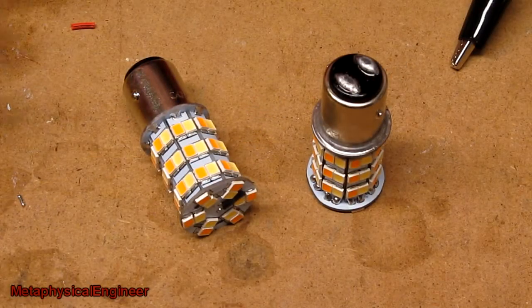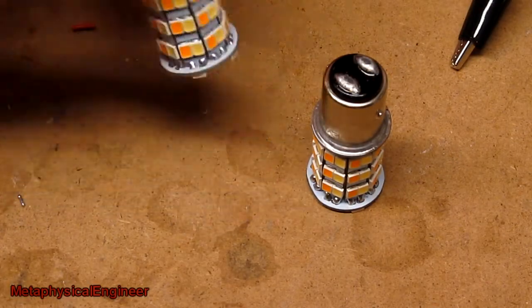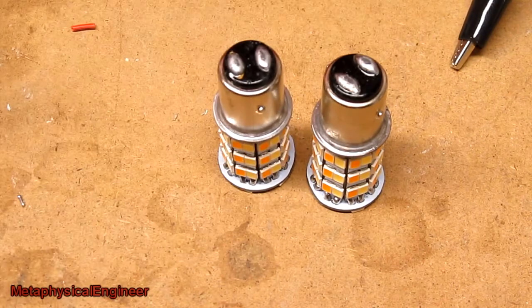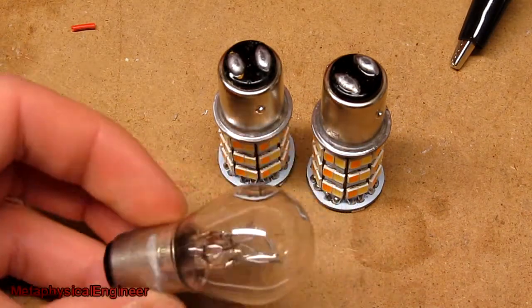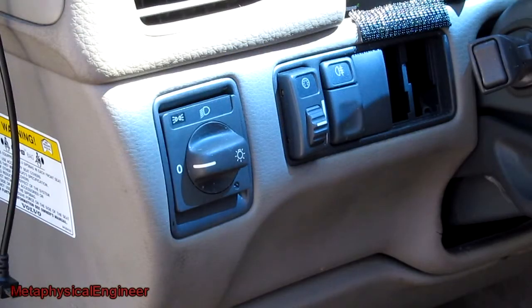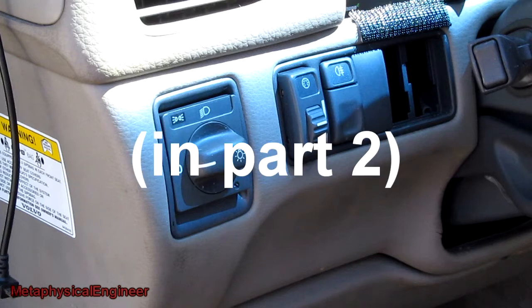When I test them on the bench, both of these bulbs function correctly. However, as you saw in the car, some weird stuff happens, because it expects something like this. The car also lacks a dedicated front running light switch, so I'll be adding one of those.